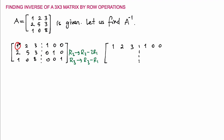2 times 1 is 2, subtract from 2 is 0 — as expected. 2 times 2 is 4; 5 minus 4 is 1. 2 times 3 is 6; 3 minus 6 is negative 3. 1 times 2 is 2; 0 minus 2 is negative 2. 2 times 0 is 0, so it gives me 1 here. And this one is not going to be affected.